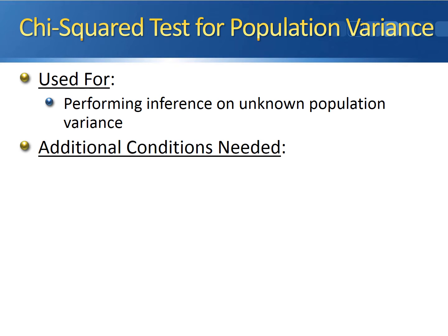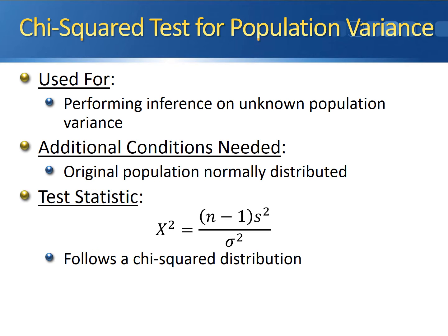There is one condition that we need: we need to make sure that the original population is normally distributed. If this condition checks out, we can go ahead and run the test. The test statistic follows a chi-squared distribution, denoted by χ². It's equal to (n-1) times s², the sample variance, divided by the hypothesized population variance, σ². This test statistic, like the t-test, also has n-1 degrees of freedom.